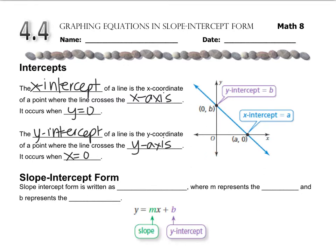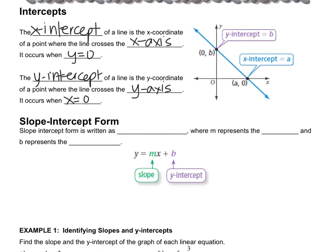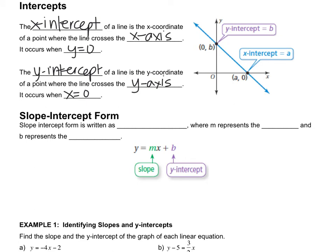Now that we know what intercepts are, let's combine them into slope-intercept form. The general formula for slope-intercept form is y equals mx plus b, where m represents the slope, which we talked about in the last lesson, and b represents the y-intercept.